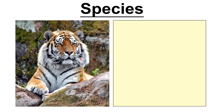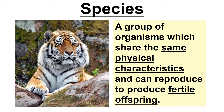Next term is species. A species is a group of organisms which share the same physical characteristics and can reproduce to produce fertile offspring. Remember, fertile means they can produce offspring themselves. This is a way to show that you've got separate species — if you breed two similar animals together and the offspring are sterile, that would be evidence that they are different species.